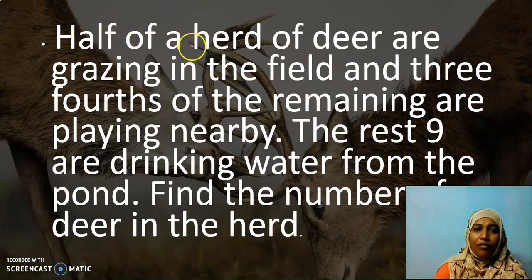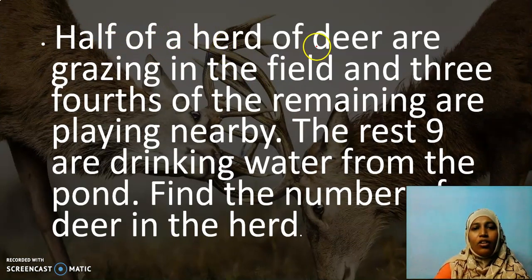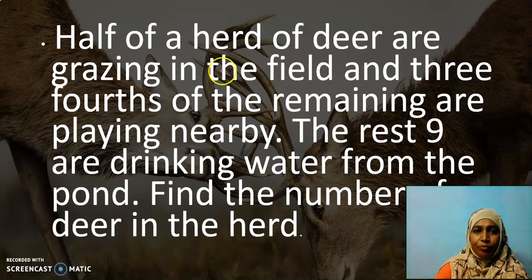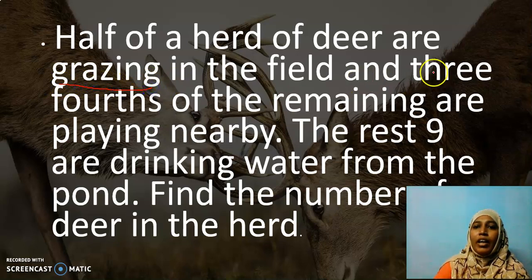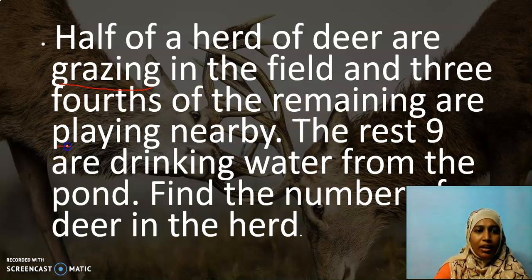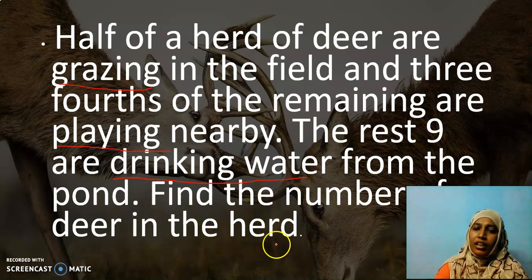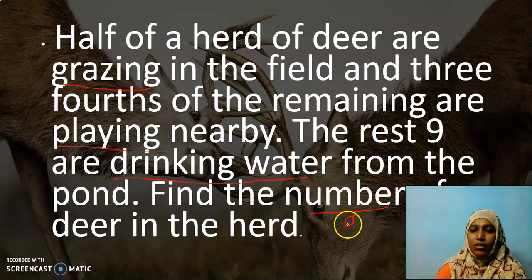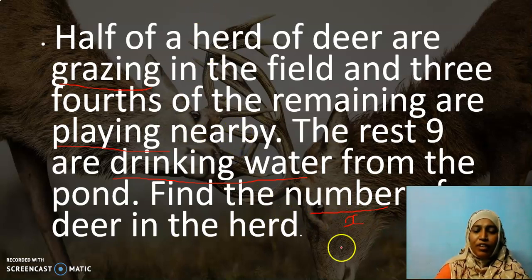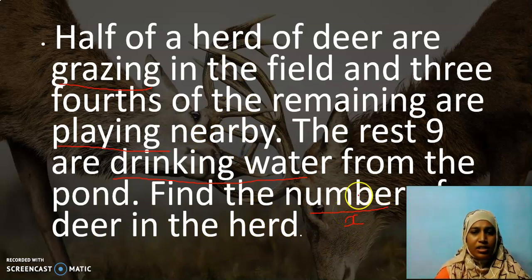Now, the next problem for you is half of a herd of deer are grazing in the field. Three-fourth of the remaining are playing, the rest, nine are drinking water from the pond. Find the number of deer in the herd. We don't know how many deers are there. So I will have it as x. That is what I have to find. Fix the objective for the problem. Then, it will be easy for you to simplify it.